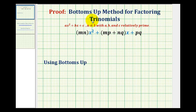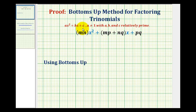Now we're going to look at a proof for the bottoms-up method for factoring a trinomial in the form ax squared plus bx plus c, when a is not equal to one and a, b, and c are relatively prime, meaning there are no common factors. The bottoms-up method is a way to factor a trinomial when a is not equal to one by factoring a trinomial when a is equal to one.